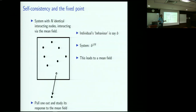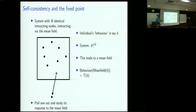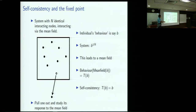When you have n of these particles which are behaving according to B and they are also independent, that leads to a certain mean field — what's the average behavior of the entire system of particles? That's what I call the mean field. Then you pull one particle out and you see how this particle will respond to this mean field. The response to the mean field is essentially a function of our initial assumption B. The self-consistency requirement is the requirement that T of B be B itself — the one that we started with. There are four levels of these fixed points and I want to highlight the four and also indicate the relationship between them.